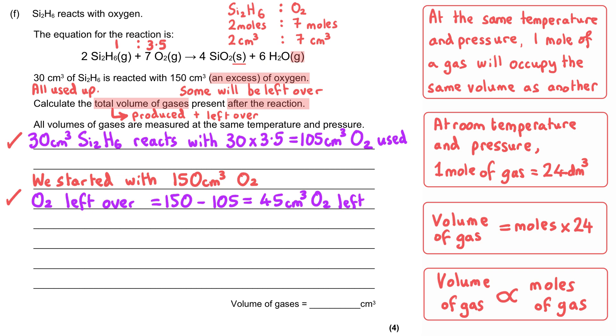Water has a six in front of it in the equation, so that means two moles of Si2H6 would produce six moles of water, or 2 cm³ of Si2H6 would produce 6 cm³ of water. The ratio is 2 to 6 or reduced down, 1 to 3. So whatever volume of Si2H6 we use, we will produce three times the volume of water. Since we're using up all of our 30 cm³ of Si2H6, the volume of water produced will be 30 multiplied by 3, which is 90 cm³ of water.